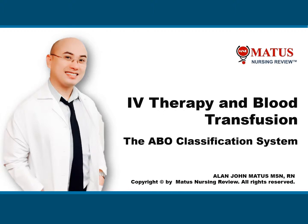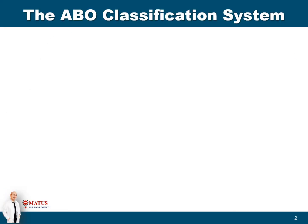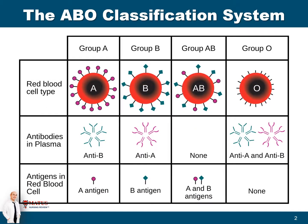Our next topic will be on intravenous therapy and blood transfusion. First, let's discuss the ABO classification system. Blood types are classified as group A, type B, type AB, and type O. The ABO classification system classifies blood according to the antigen that is found in the blood.